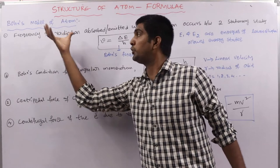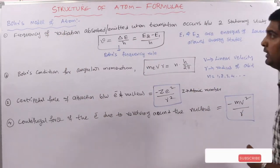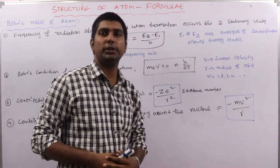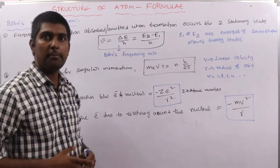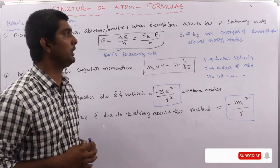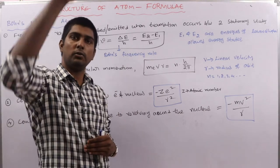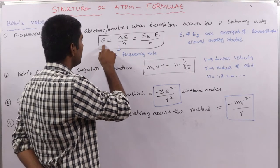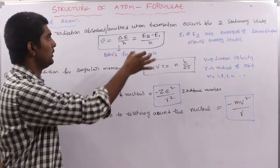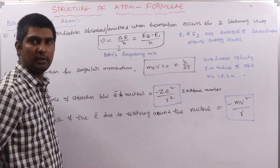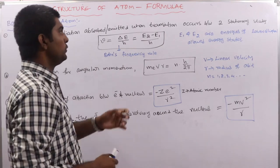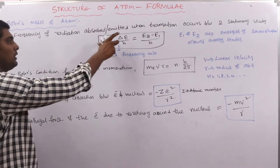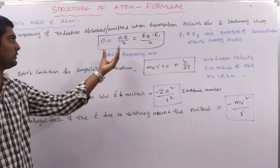From Bohr's model, when an electron transitions between two stationary states — jumping from lower to higher by absorbing energy, or higher to lower by emitting energy — the frequency of radiation is ν = ΔE/h = (E₂ − E₁)/h. This is Bohr's frequency rule.